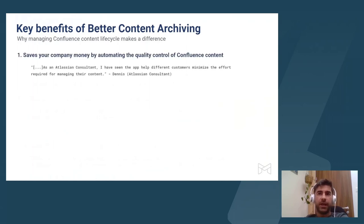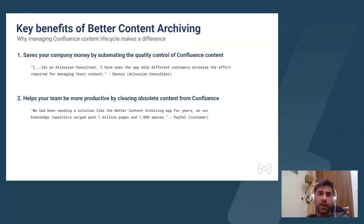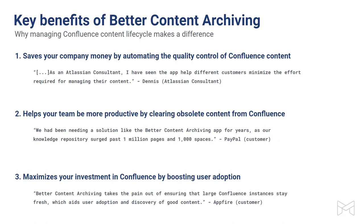Now let's look at the key benefits that you're gaining with Better Content Archiving. It saves money — you're automating the process of finding, updating, notifying page owners, and cleaning up your content, so you save money by not having to have a full or part-time employee doing this. Connected to this, it saves time — the less time your team members have to bother each other for missing information or incomplete documents, the more time is spent on productive work. And third, commonly forgotten, is that you invested in Confluence — don't let it lose its appeal. Maintain Confluence content lifecycle so the tool can live up to its full potential.